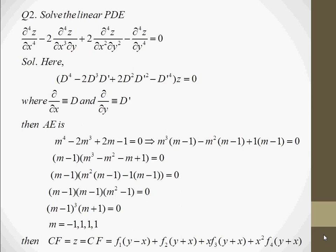We take another example. We put ∂/∂x as D and ∂/∂y as D', giving the PDE in terms of D and D'. We put D equal to m and D' equal to 1, giving the auxiliary equation in terms of m. Now we factorize it and get the roots m equal to −1, 1, 1, 1 — three roots are repeated. Applying the formula for repeated roots, the complementary function is f1(y − x) + f2(y + x) + x·f3(y + x) + x²·f4(y + x).